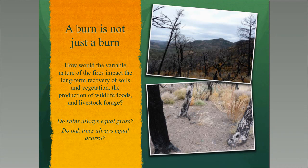It's important to recognize that a burn is not just a burn. When these fires were first taking place, most of the maps available to landowners were just perimeter burns, but fires are not equally represented across an area — they're very diverse and variable. We were interested in how the variability of fire would affect livestock forage and wildlife food production. Just because it rains doesn't mean it's going to produce grass, and just because you have oak trees remaining after a fire doesn't mean they're going to produce acorns. We also wanted to address compromises to soil nutrients and microbial activity within different burn severity levels.